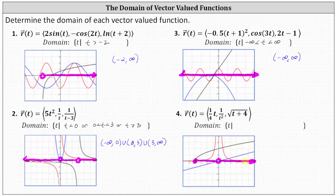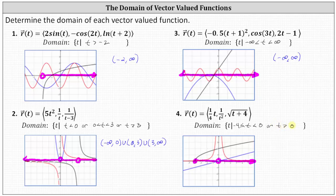This is the intersection of all three domains — the interval for which all three components are defined. This is the domain of the vector-valued function, which is t such that t is greater than or equal to negative four and less than zero, or t is greater than zero. Using interval notation, we have the interval from negative four to zero, closed on negative four and open on zero, union the open interval from zero to infinity.